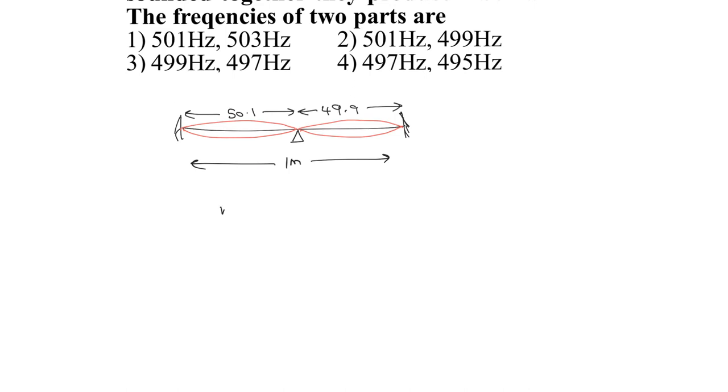The frequency of the first part is ν₁ = V/(2L₁), and the frequency of the second part is ν₂ = V/(2L₂).